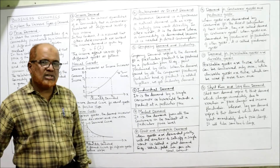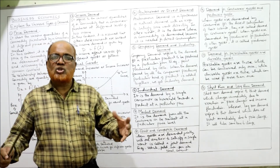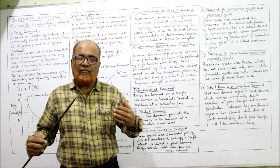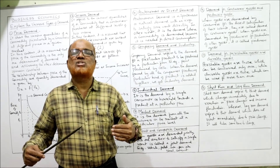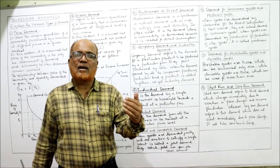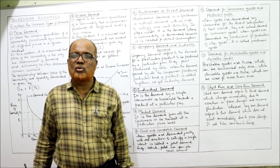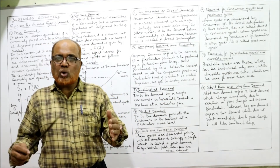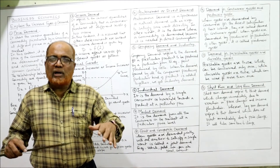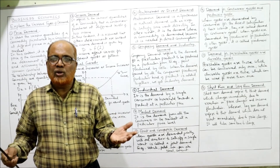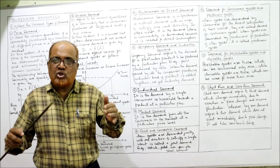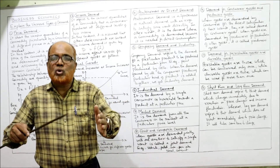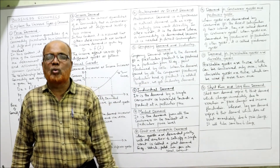Market demand is the total demand of all consumers in a particular market at a particular price. Joint and composite demand refers to situations where a single want is satisfied by consuming more than one good jointly — for example, a car and petrol are both needed together. The demand for both together is called joint or composite demand.